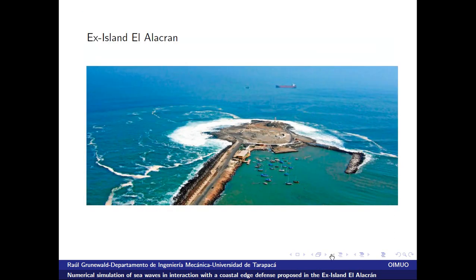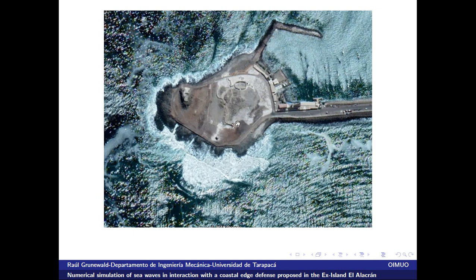In the name of this topic we have this zone, the ex-Island El Alaclan. The reason for the name 'ex-Island' is that this was the Island El Alaclan, and the continent is nearby. Because the island was near to the continent, a short road was constructed to join the island to the continent. That is why its name is now ex-Island. Here is another picture of the ex-Island where waves come from the southwest and impact here, creating a surf zone.